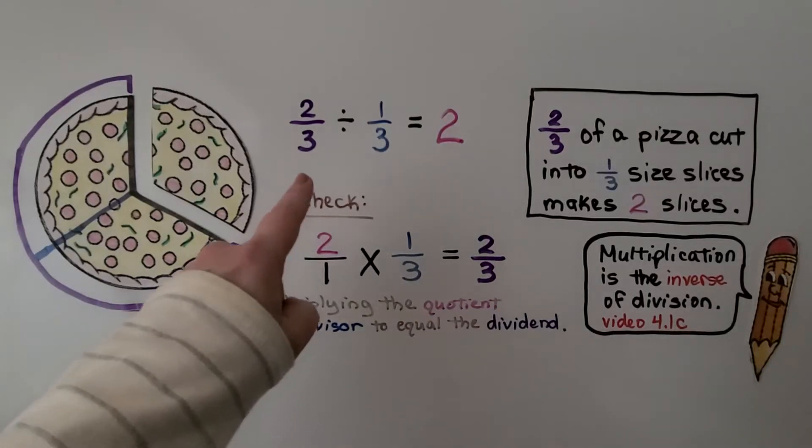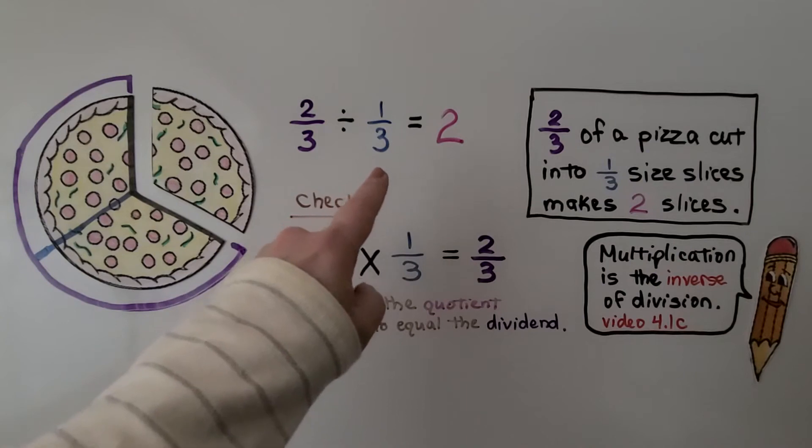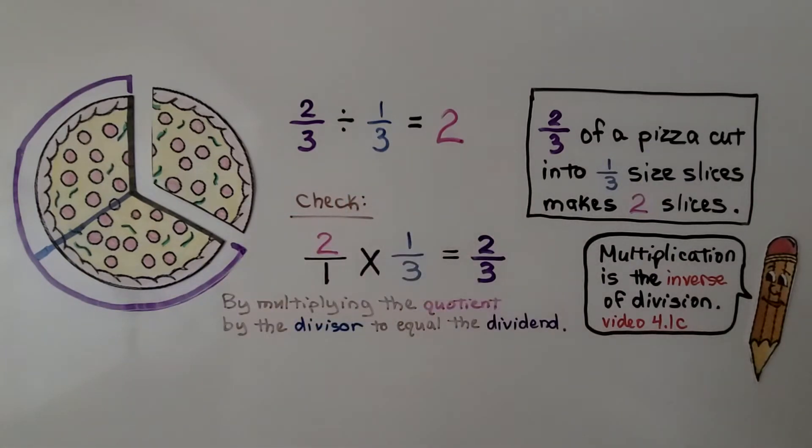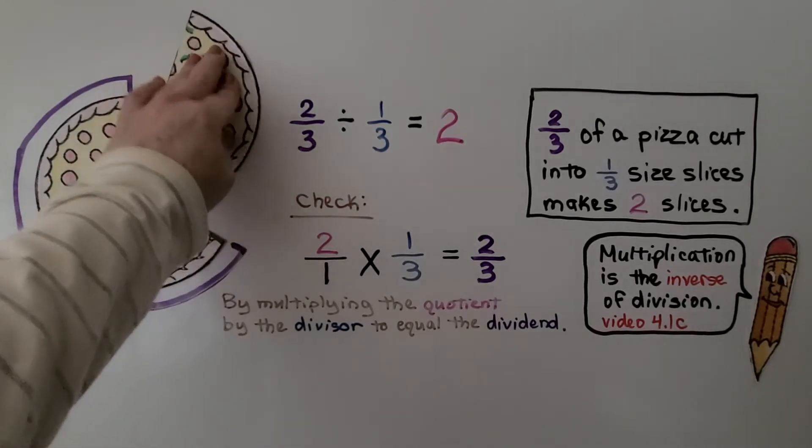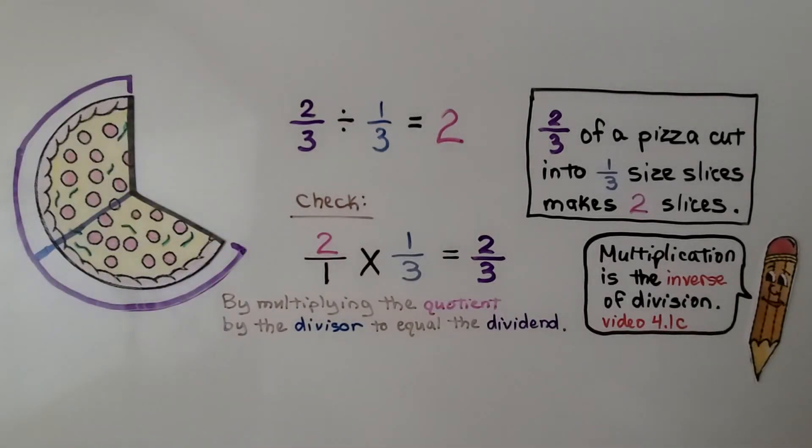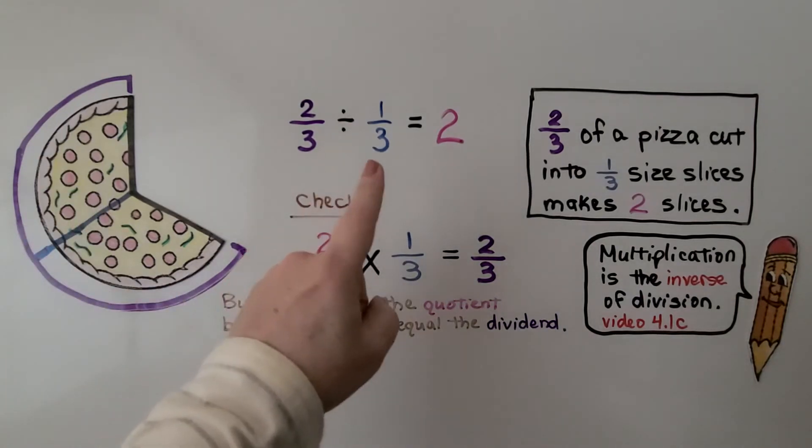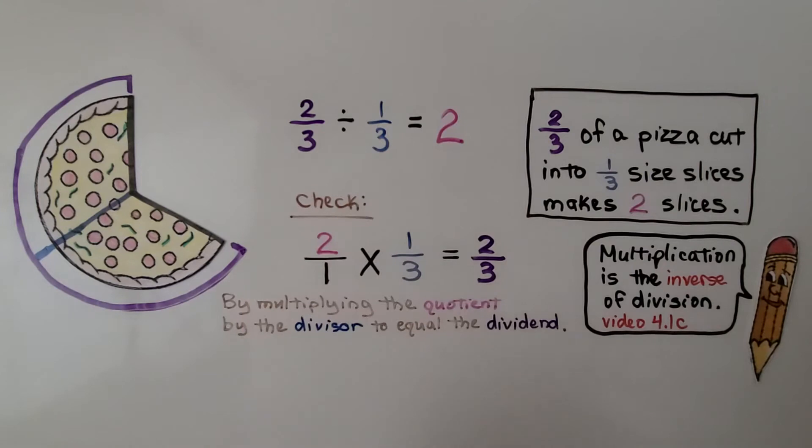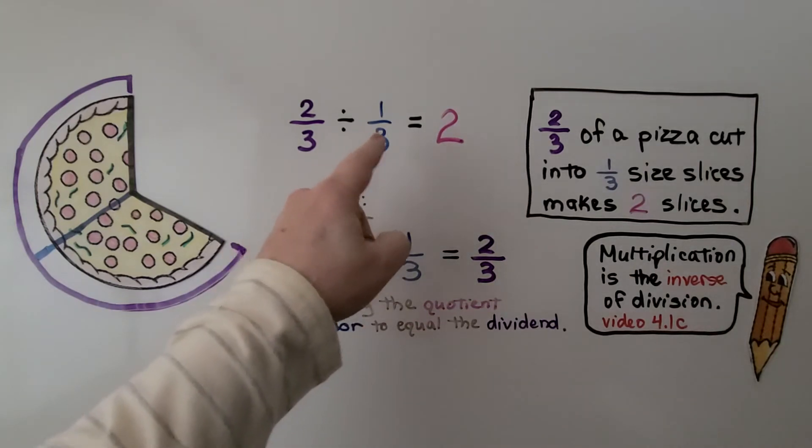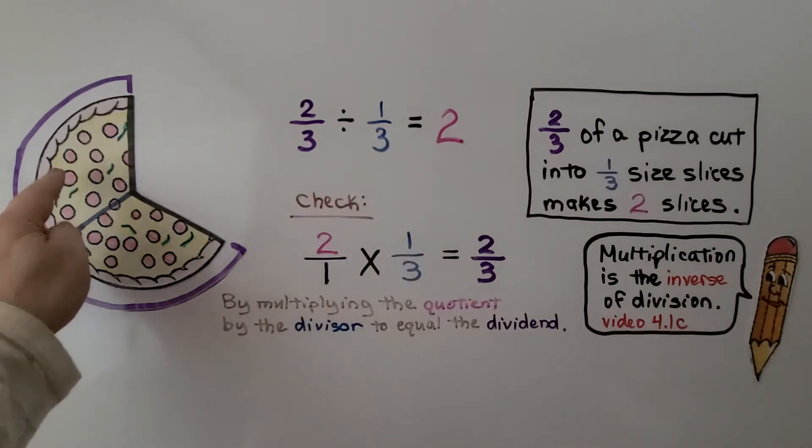Here we have two-thirds divided by one-third, and it's saying it's equal to two. We have a whole pizza. We have two-thirds of it. So let's take this one away. So now we have two-thirds of a pizza. It's divided by one-third. That means we have two-thirds of a pizza cut into thirds, and that's the size of the slices. It's going to make two slices.